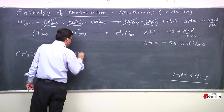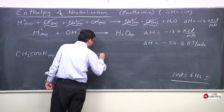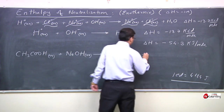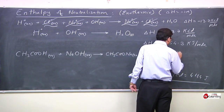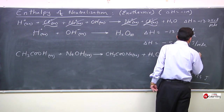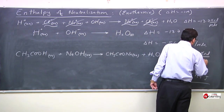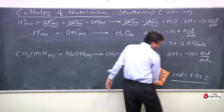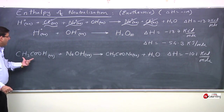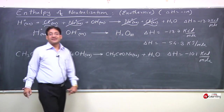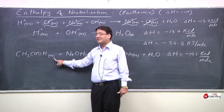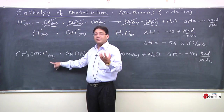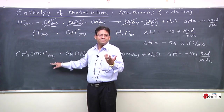Now observe this neutralization reaction: acetic acid (CH₃COOH) in aqueous state reacts with NaOH in aqueous state. Acetic acid is the acid here — it is also called vinegar, which we use in our kitchens. NaOH is caustic soda.